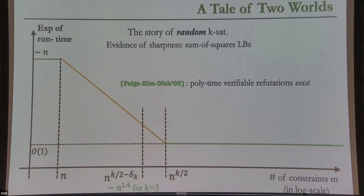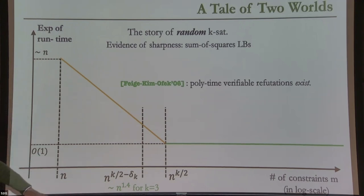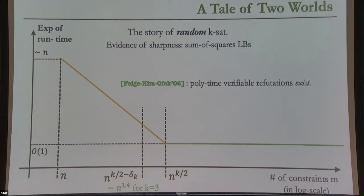This is somewhat surprising because there is no worst-case counterpart of this behavior — no known phenomenon where there is a polynomial-size certificate of unsatisfiability but polynomial-time algorithms can't access it. We don't have proofs that polynomial-time algorithms cannot access it, but so far that's the behavior for the best-known algorithms. This is a very clever result of Feige–Kemanoff, really one of a kind, proven using a combination of combinatorial and spectral techniques. For K=3 the regime happens to be between N^{1.4} and N^{1.5}.